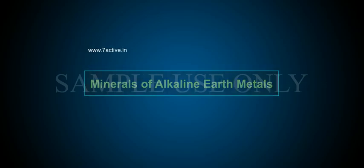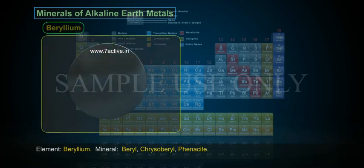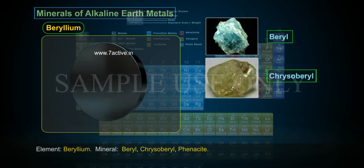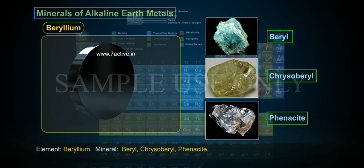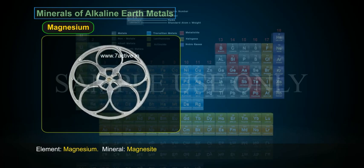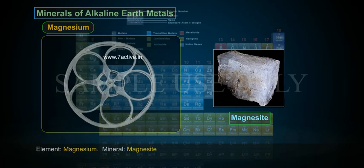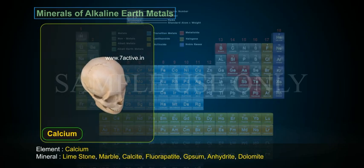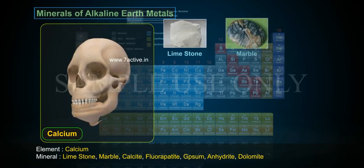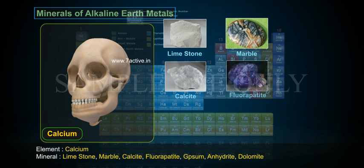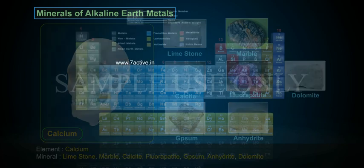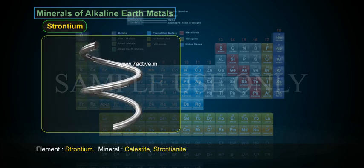Minerals of alkaline earth metals: Beryllium — beryl, chrysoberyl, phenacite. Magnesium — magnesite. Calcium — limestone, marble, calcite, fluorapatite, gypsum, anhydrite, dolomite. Strontium — celestite, strontianite.